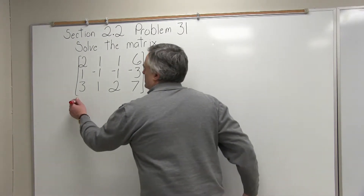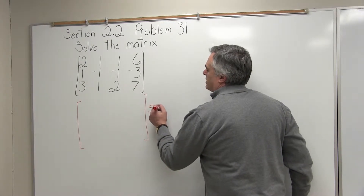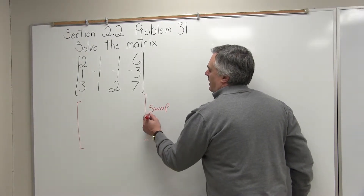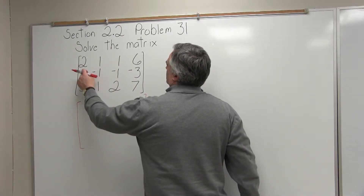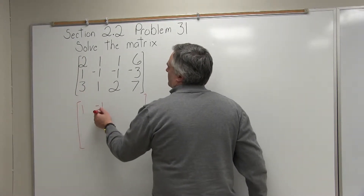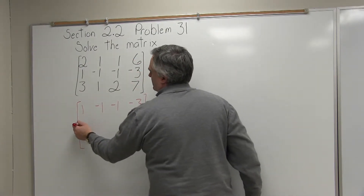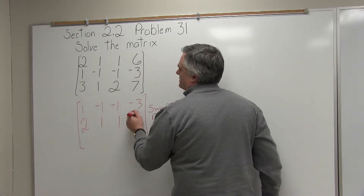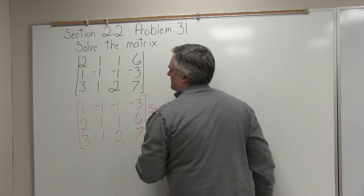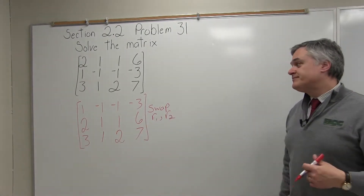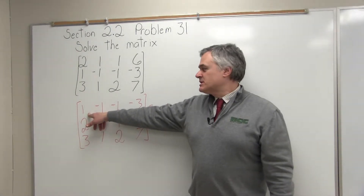Let's start our next matrix. Off to the side I'm going to write what I'm doing: swap r1, r2. So what was row 2 is going to come up to row 1: 1, negative 1, negative 1, negative 3. And what was row 1 will push down to row 2: 2, 1, 1, 6. Row 3 just stays row 3: 3, 1, 2, 7. Step 1 is done — we now have a 1 in the upper left.